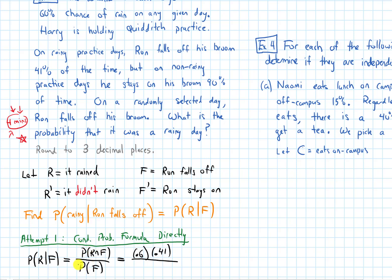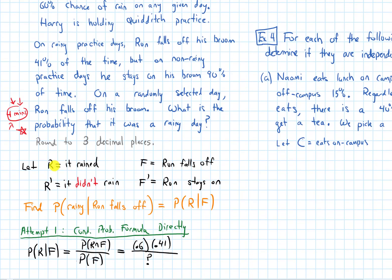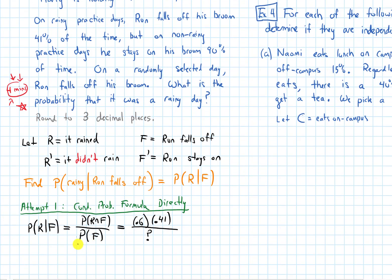For the probability in the denominator, this is the probability that Ron falls off. This one's a little bit trickier, because he could fall off if it's a rainy day, but he could also fall off his broom sometimes if it's a non-rainy day. So for right now, I'm going to put a question mark here. I can't just multiply two values like I did in the numerator. So this one in the denominator is not given and not as easy to compute.